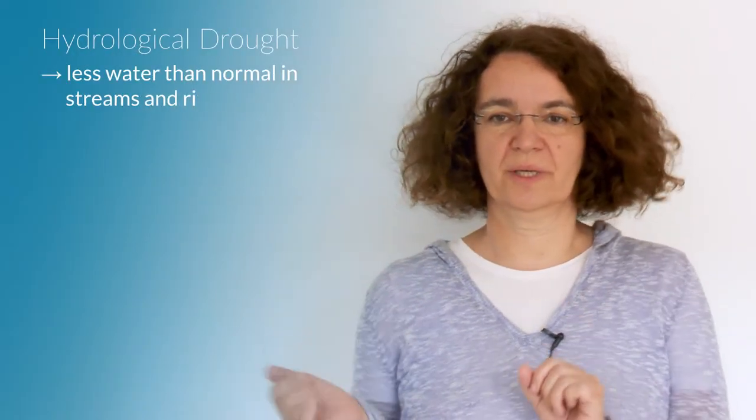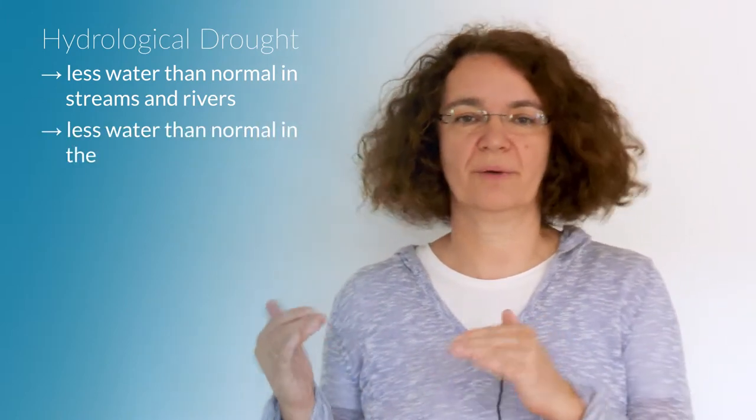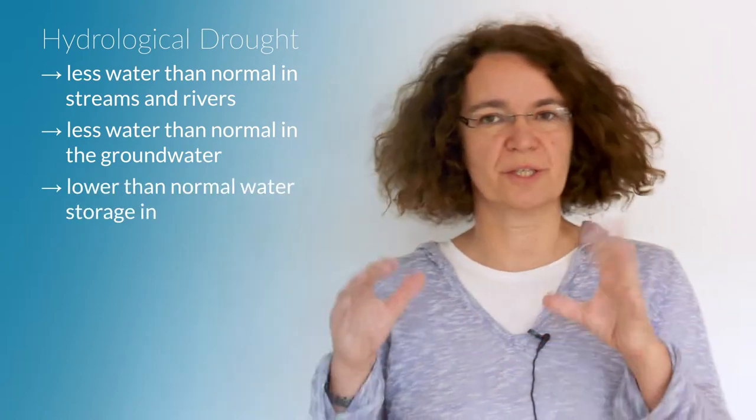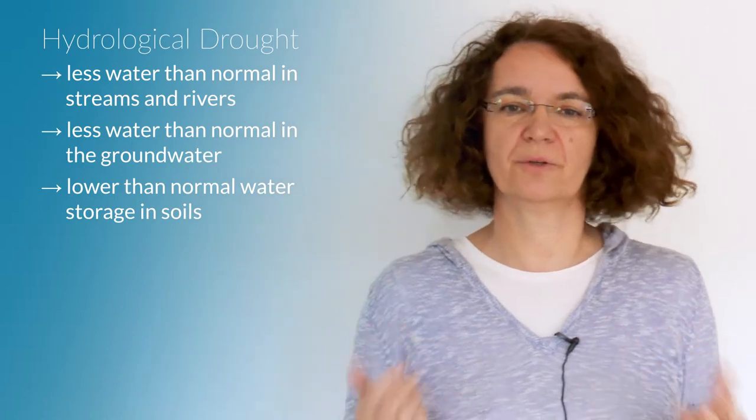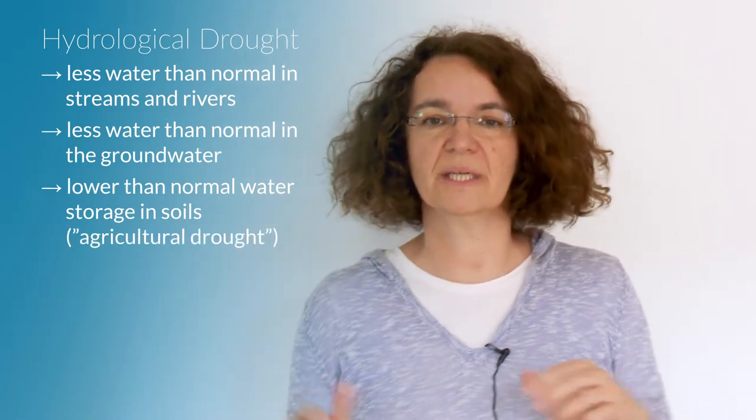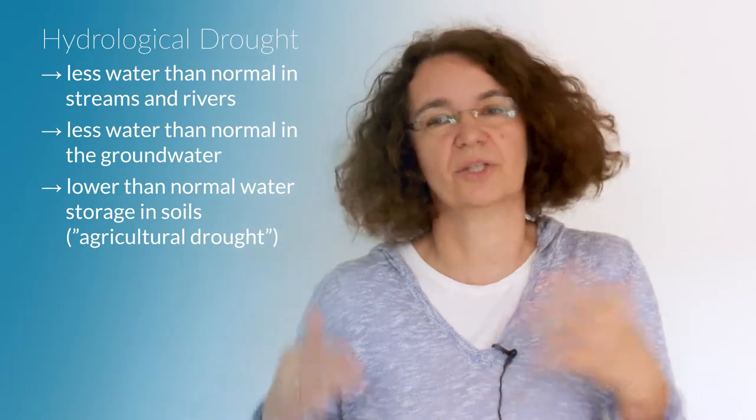This is why it's very useful in drought risk assessments to also quantify hydrological drought. Hydrological drought commonly refers to less water than normal in streams and rivers or in groundwater. In my opinion also lower than normal soil moisture should be subsumed under the term hydrological drought. However commonly soil moisture drought is called agricultural drought even though it's also relevant for forestry and nature conservation sectors.